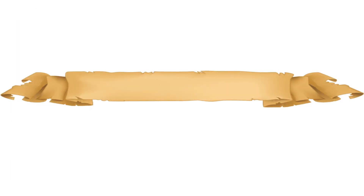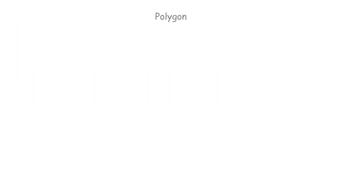9.1 Polygons. Polygon refers to the words 'poly', which means many, and 'gon', which means angle.